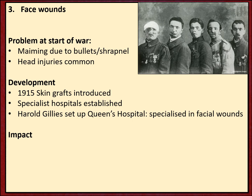From 1915, some skin grafts became possible, though these were only performed back at base hospitals and only at specialist ones. From 1917, a New Zealand surgeon called Harold Gillies set up the Queen's Hospital in Kent, specialising in facial wounds. Gillies had been involved even in the design of the hospital, and it was there that he developed many specialist operations. Of course, this only helped soldiers who made it all the way back through the evacuation route - none of this was possible near the front lines.